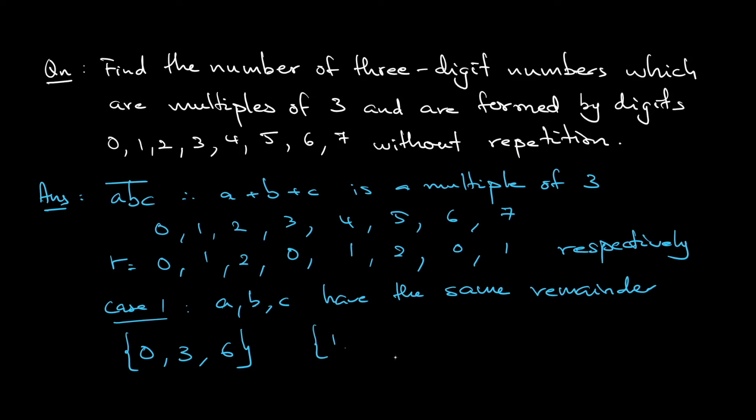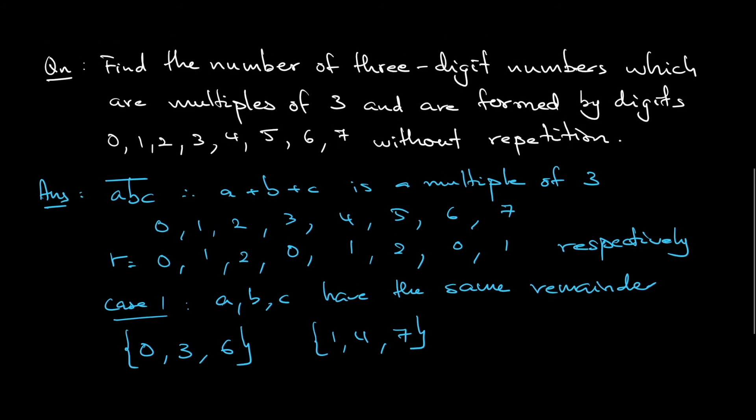Remainder 1 is the 1, 4, and 7. Notice you cannot have a, b, c all remainder 2 because you only have numbers 2, 5, and you do not have an 8. So for the case of 0, 3, 6, how many cases do you have? You cannot start with a 0 because it's a 3-digit number.